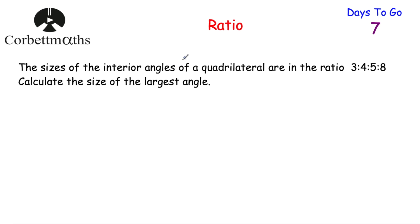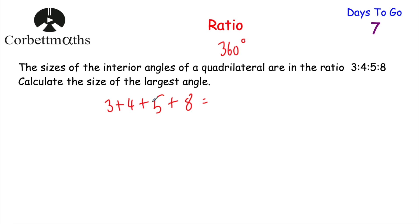Our next question: the interior angles of a quadrilateral are in the ratio 3 to 4 to 5 to 8. Calculate the size of the largest angle. We know the angles in a quadrilateral add up to 360 degrees. We're going to share 360 in this ratio. Adding the parts: 3 plus 4 plus 5 plus 8 equals 20. Then 360 divided by 20 equals 18 — so there are 18 degrees in one part.